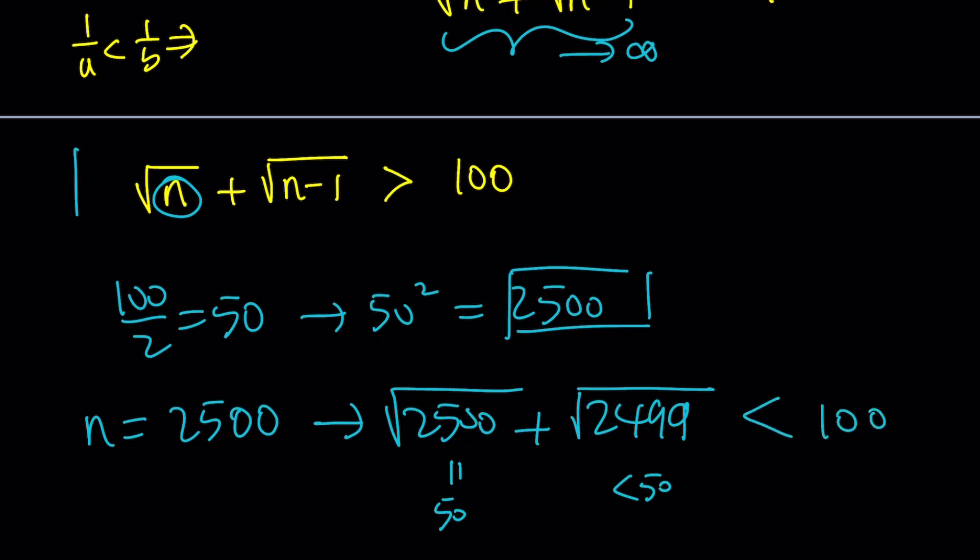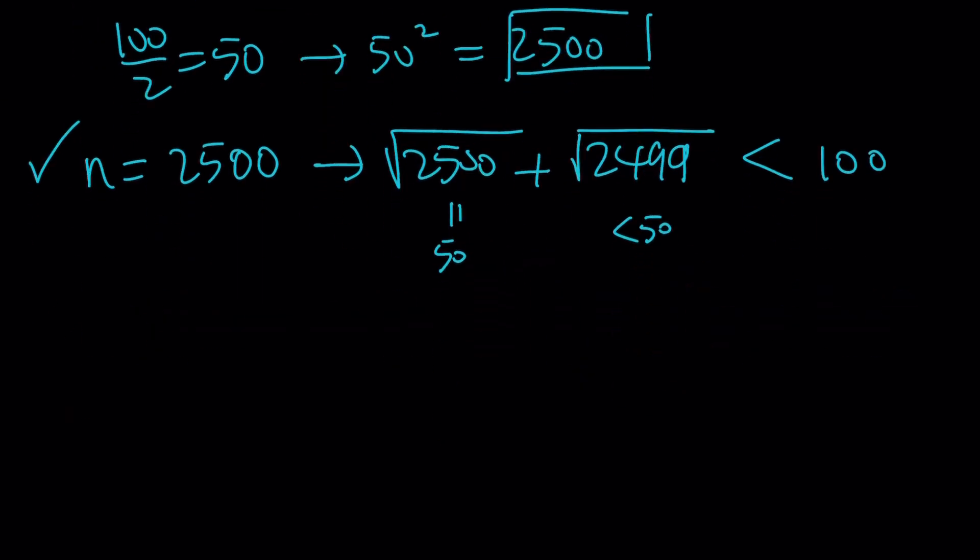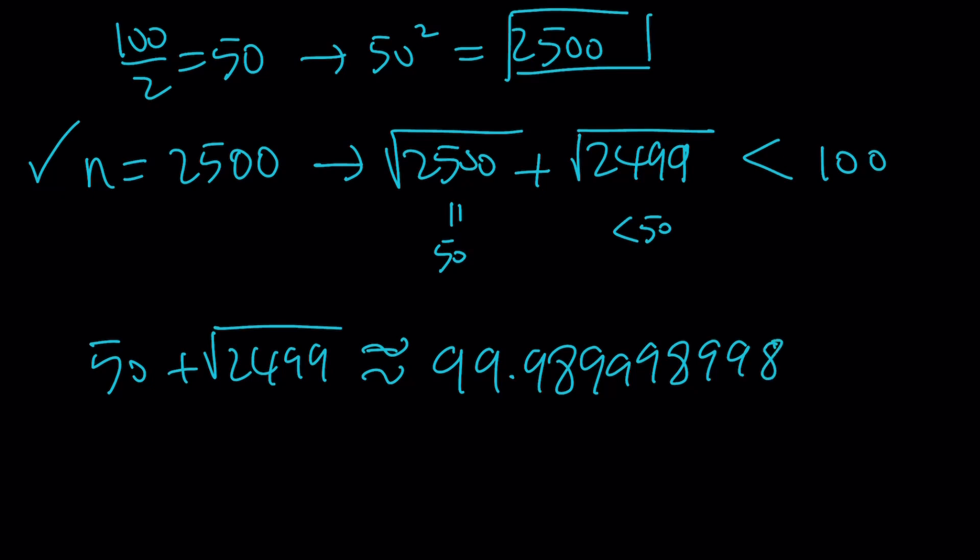But wait a minute. You want that sum to be greater than 100. So this number is not going to work. Why did we test it? Because that's the tipping point. Think about it. And also, this is a 50. So if you add 50 and this number, the square root of 2,499, that's going to be approximately 99.989. You get the idea. It is very close to 100, but less than 100. Make sense? But very close.